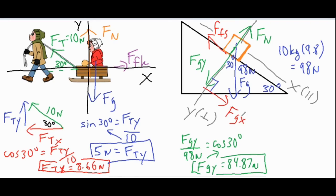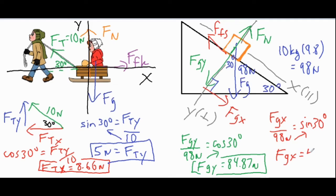For the x component, fgx is opposite the 30-degree angle, so this time we use sine: fgx / 98 = sin(30°). Multiplying both sides by 98 gives fgx = 49 newtons.